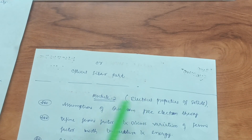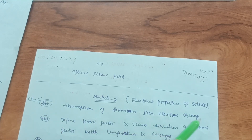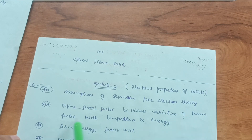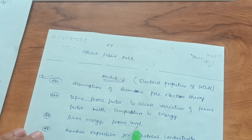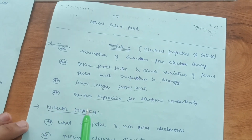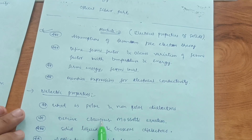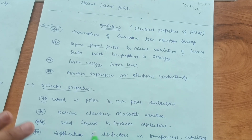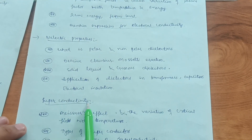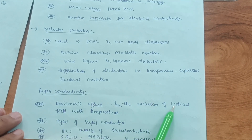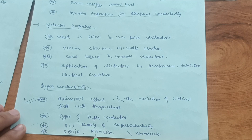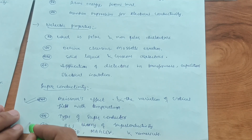Module 2 covers electrical properties of solids. Key questions include: assumptions of the quantum free electron theory, definition of Fermi factor and its variation with temperature and energy, definitions of Fermi energy and Fermi level, and the expression for electrical conductivity. The dielectrics chapter covers polar and non-polar dielectrics, the Clausius-Mossotti equation, and applications in transformers and capacitors. Superconductivity covers the Meissner effect, critical field variation with temperature, types of superconductors, BCS theory, and Maglev.